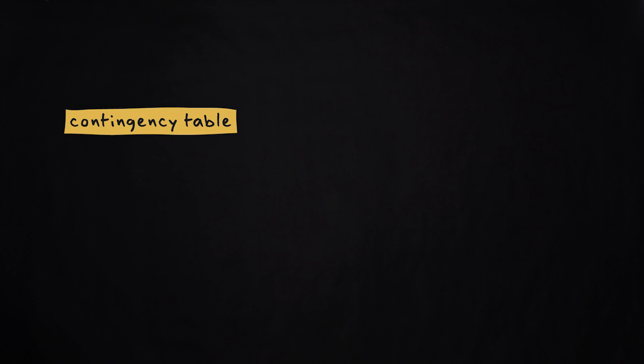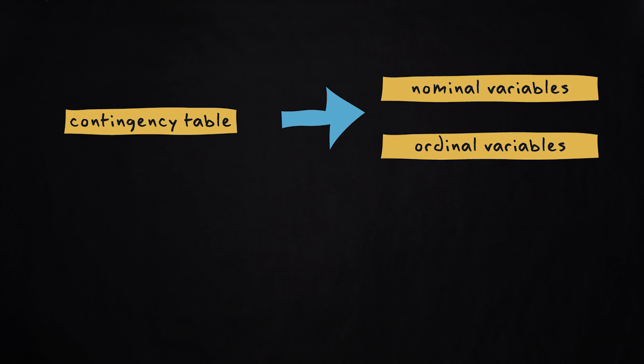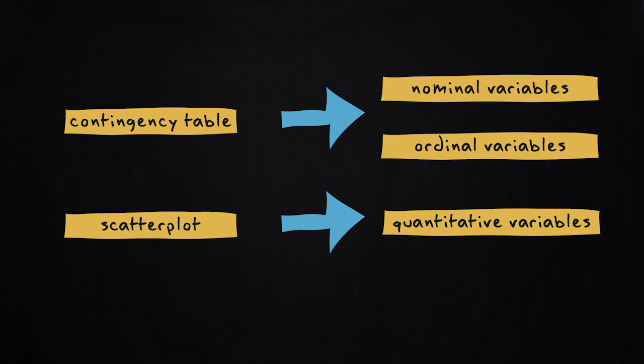A contingency table is useful for nominal and ordinal variables, but not for quantitative variables. For quantitative variables, a scatter plot is more appropriate.